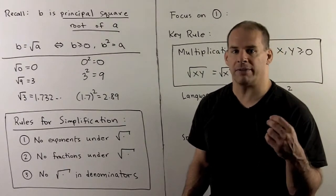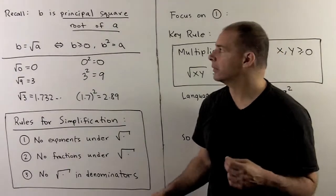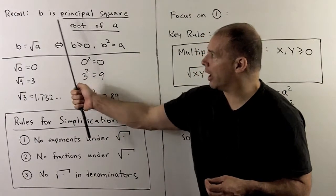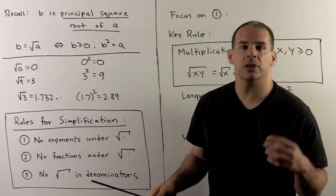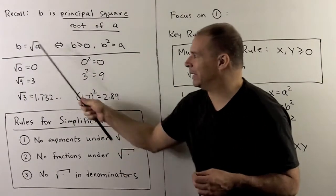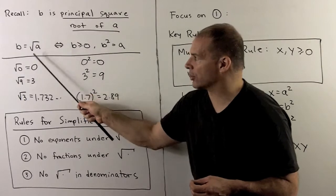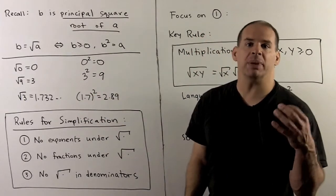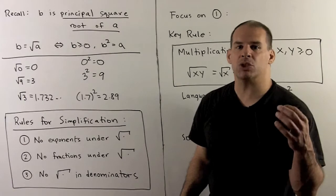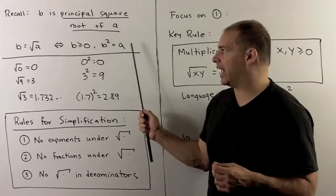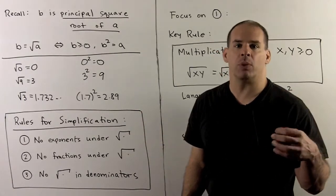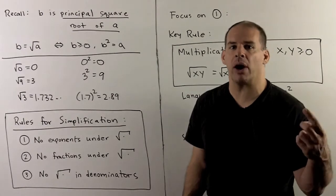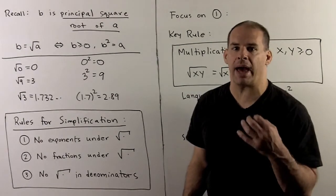Let's recall our definition. We have b, which we're calling the principal square root of a. We denote this as b equal to radical a. This just means b is greater than or equal to zero, and b squared is equal to a. So the idea is: if I want the square root of a, try to find a b such that when I square it, we get a back.